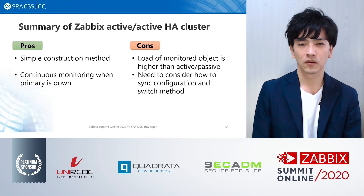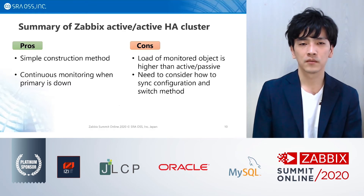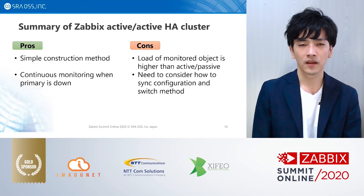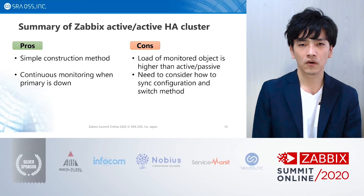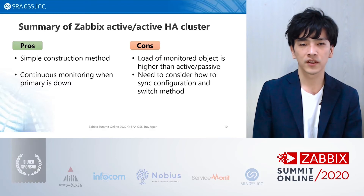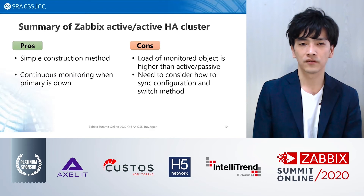Pros and cons of Active-Active Cluster are summarized as follows. As pros: simple system construction method and continuous monitoring when the primary goes down with no interruption. As cons: system load on monitored objects becomes higher than Active-Passive Clusters, because all servers monitor the same object. You should also consider configuration synchronization and switching methods from secondary to primary.